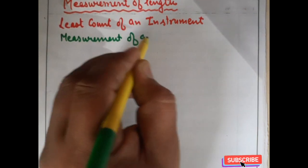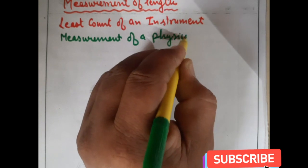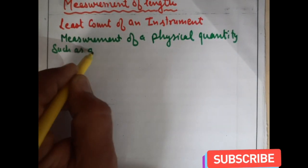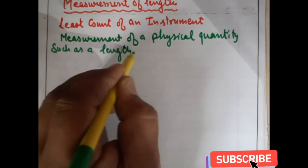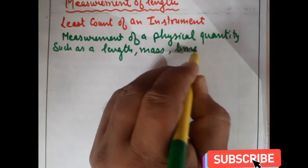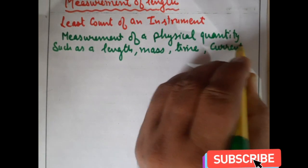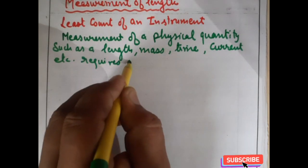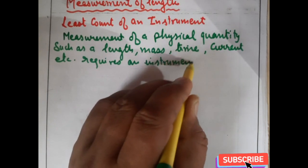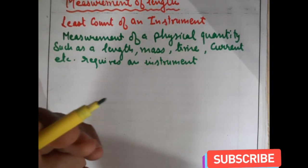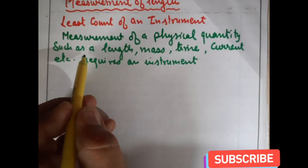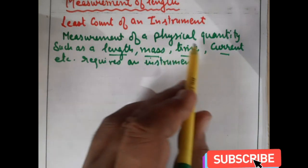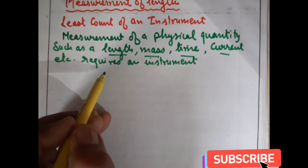Measurement of a physical quantity such as length, mass, time, current, etc. For measurement we require instruments — for all these measuring things we need an instrument.